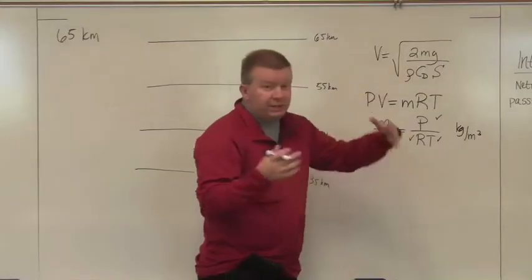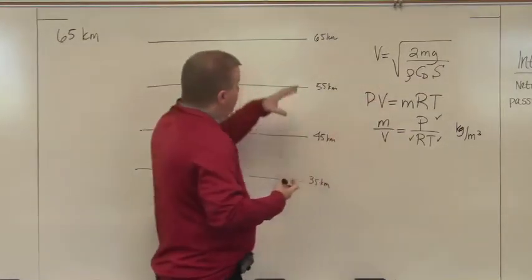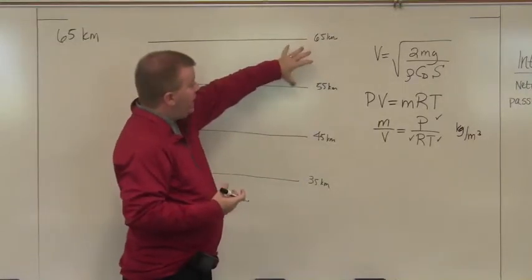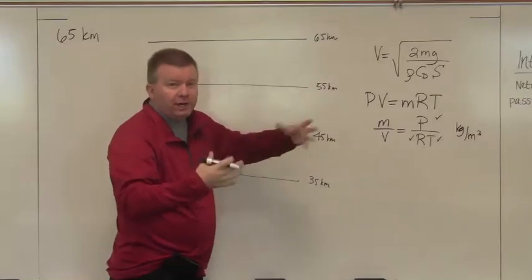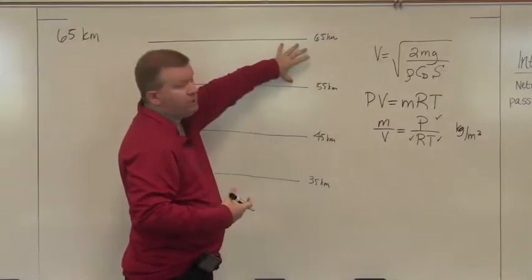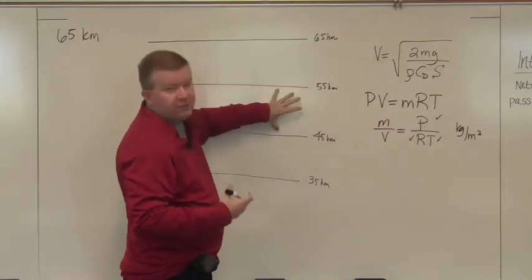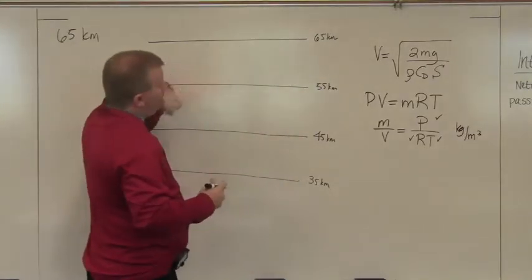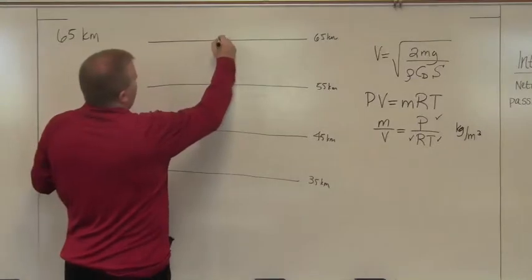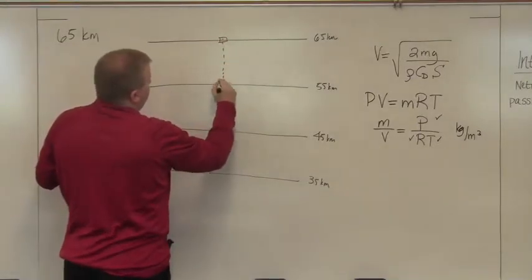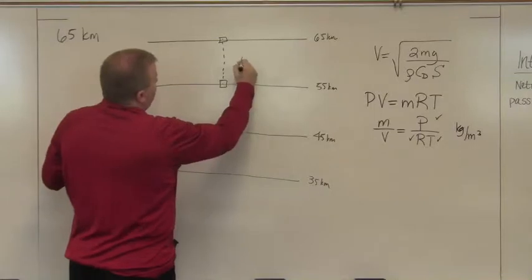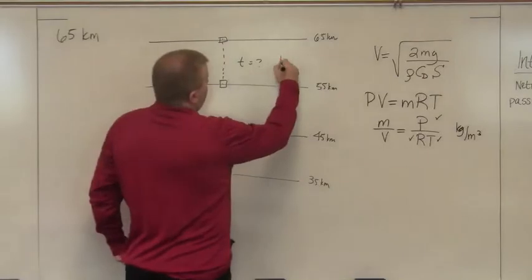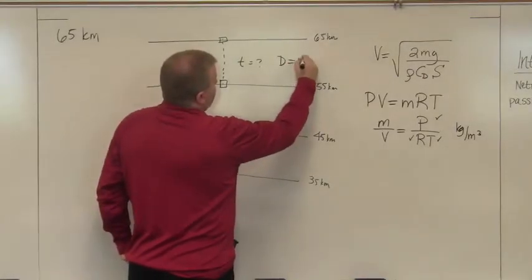So you have density. You need to make sure you get the right units on all of this stuff. R can be in a certain unit, pressure can be in a certain unit, and temperature can be in a certain unit. What you want when you look at it is kilograms per cubic meter. That's what you want density to be in to make all this come together. So remember that when you're doing it or it won't work for you. You can go look at the tables and figure out, I would say between 65 and 55 kilometers, do some numbers and say the average is whatever you calculate it is.